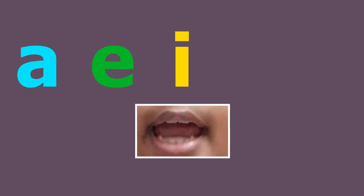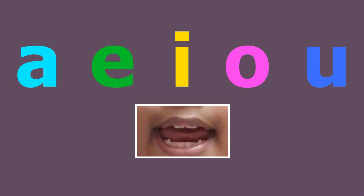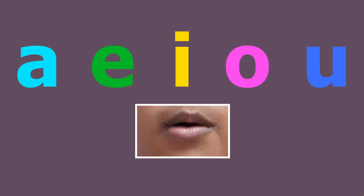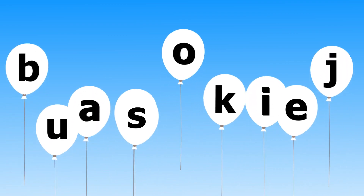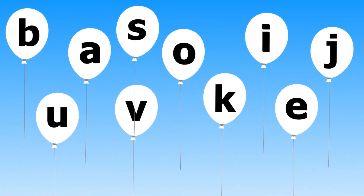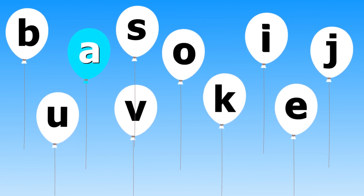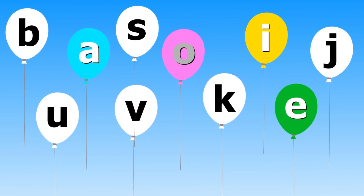A E I O U. Now colour the balloons that have vowels on them: A, E, E, I, O, U.